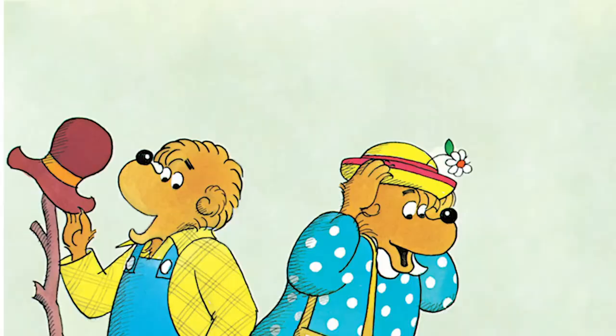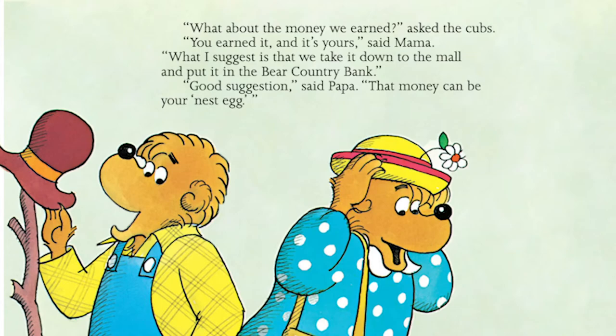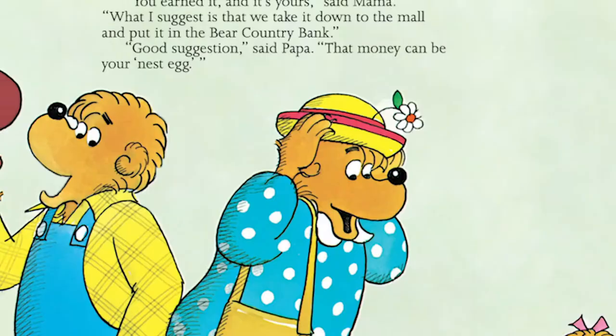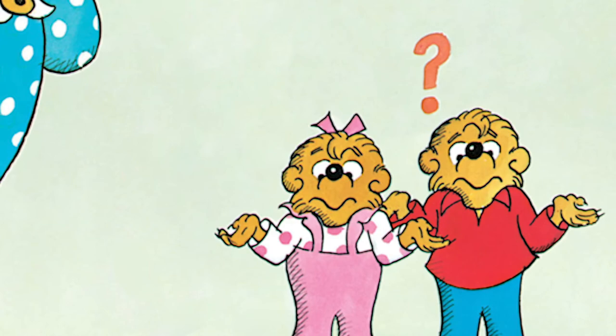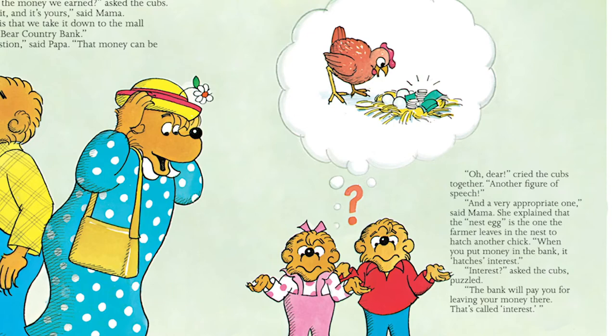"What about the money we earned?" asked the Cubs. "You earned it. It's yours," said Mama. "What I suggest is that we take it down to the mall and put it in the Bear Country Bank." "Great suggestion," said Papa. "That money can be used as a nest egg." "Oh dear," cried the Cubs. "Another figure of speech!" "And a very appropriate one," said Mama. She explained that a nest egg is one that a farmer leaves in the nest to hatch another chick — when you put money in the bank, it hatches interest. The bank will pay you for leaving the money there. That is called interest. That day, the Bear family went to the bank and opened an account for the Cubs.